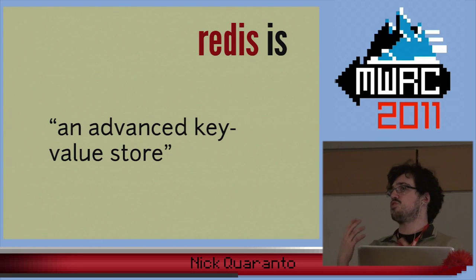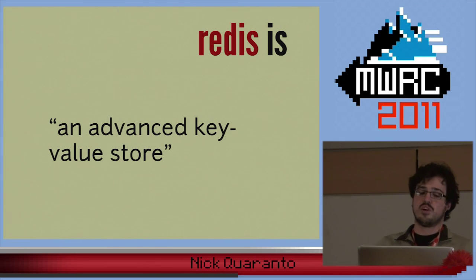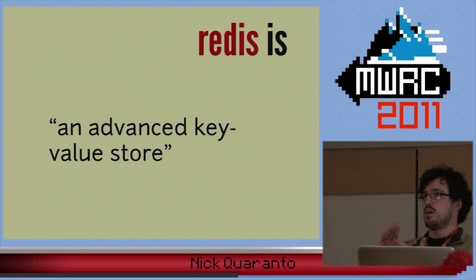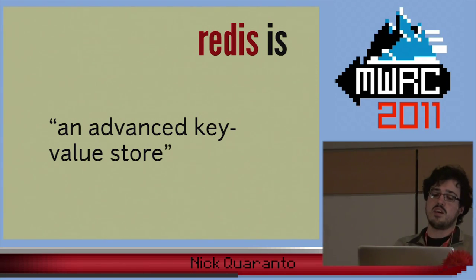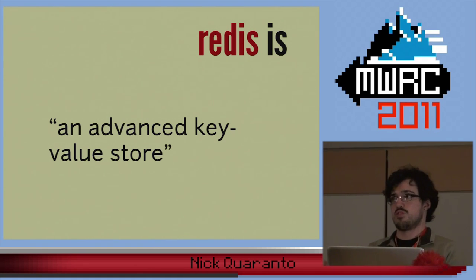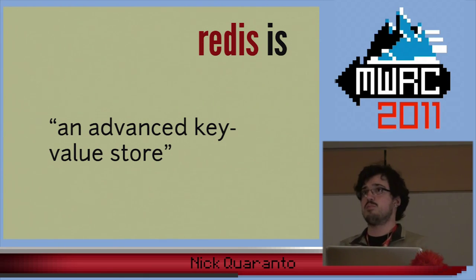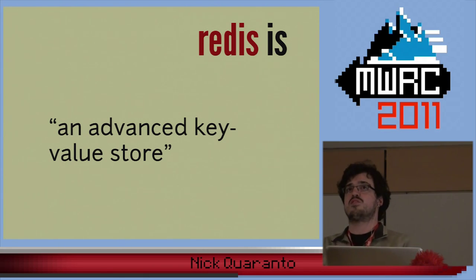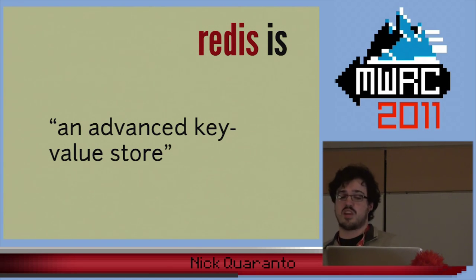It's actually termed an advanced key-value store. Other key-value stores are Memcached, Tokyo Cabinet. The keys are basically strings, the values are strings usually. So there's no tables, no relations, no graphs, no documents. All you have is a string that maps to another string, and your database figures it out.